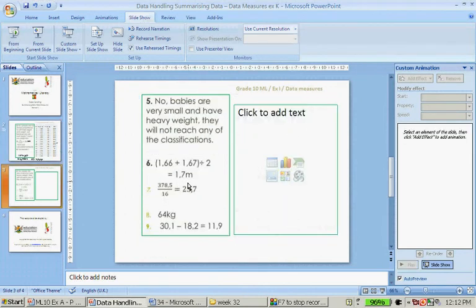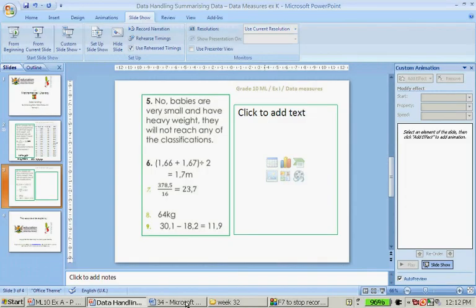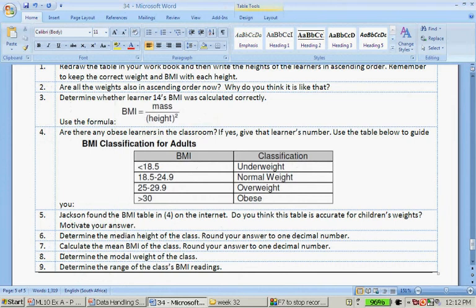But that was the instruction. The mean, if you add all of them together, you get 378.5. If you divide them by 16, the BMI is 23.7. I keep on forgetting the questions. Question number 8.